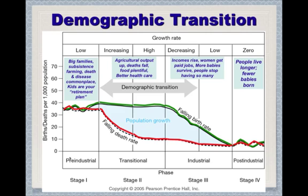Starting out in the pre-industrial, where we have subsistence farming, death and disease are commonplace and kids are your retirement plan. You have lots of children so they can work on your farm and take care of you in old age. Death is so common that you may have many children and be lucky if any even survive, so you need several for that insurance plan.